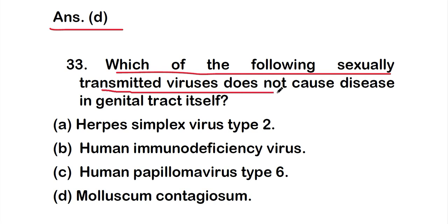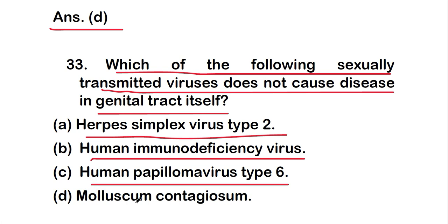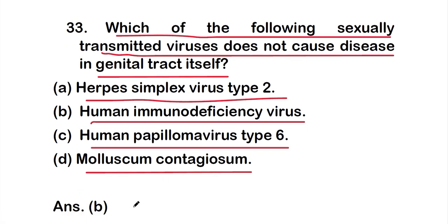Question 33: Which of the following sexually transmitted viruses does NOT cause disease in the genital tract itself? Option A: Herpes simplex virus type 2, option B: Human immunodeficiency virus, option C: Human papillomavirus type 6, or option D: molluscum contagiosum. The right answer is option B, Human immunodeficiency virus (HIV/AIDS virus), which does not cause disease in the genital tract itself.